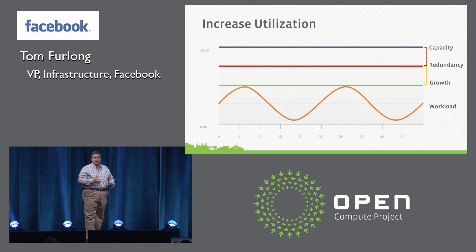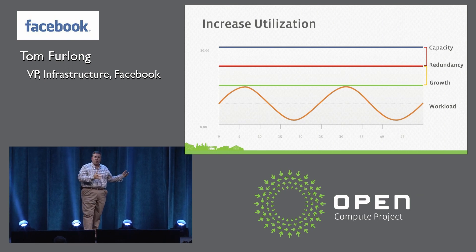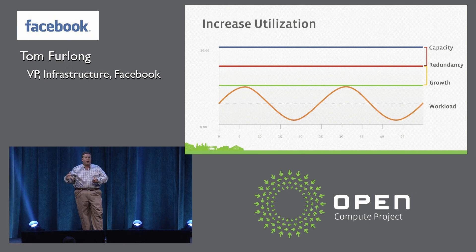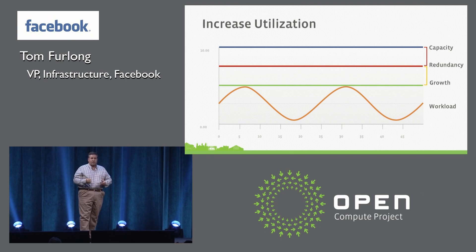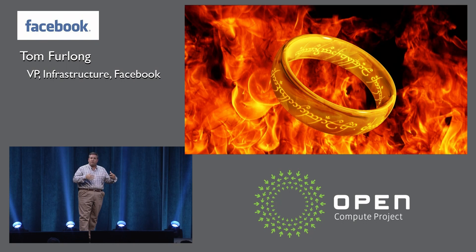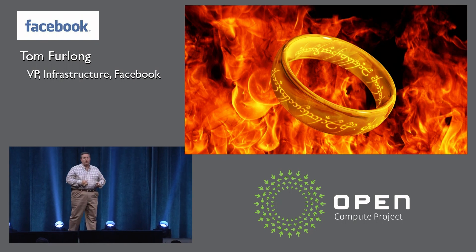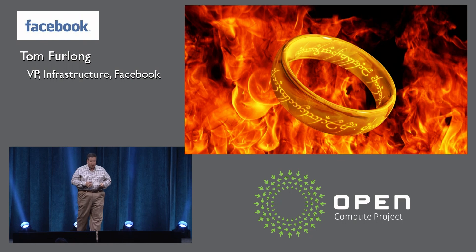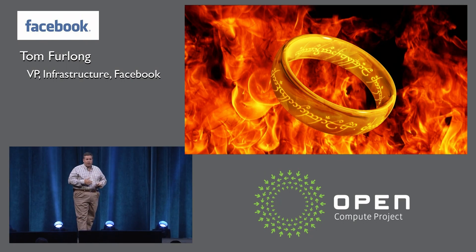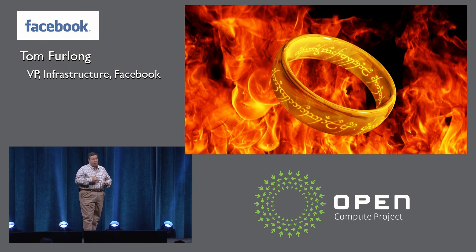The more knowledge you have about this, the better you're going to be able to plan. This is really a big data problem. You've got data that lives in the data centers themselves — in the building management systems and other systems. You also have a lot of data associated with server information which, in our case, resides within Facebook in essentially a giant configuration management database measuring all these different factors and characteristics of the hardware. What we need is essentially one system that pulls all of this together — one system to rule them all. We need to combine that facility data with the IT data, and really DCIM is the umbrella architecture for doing this.